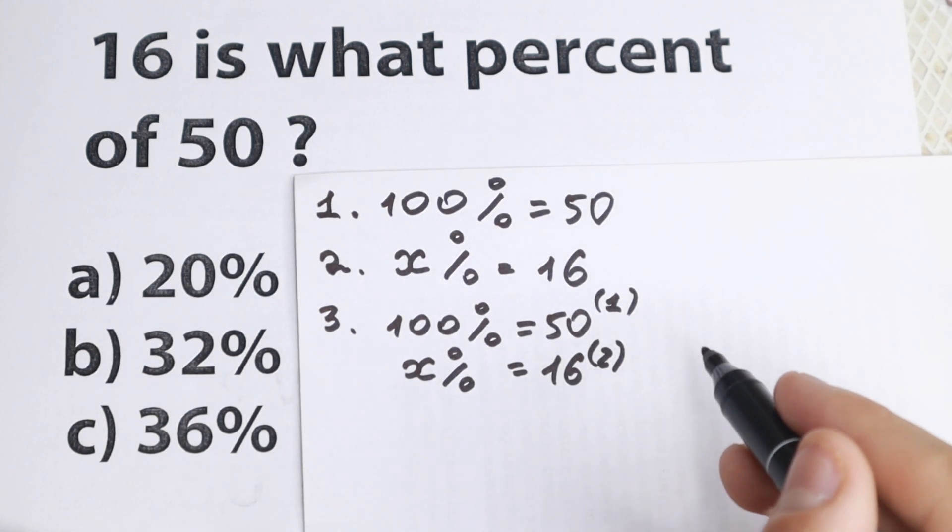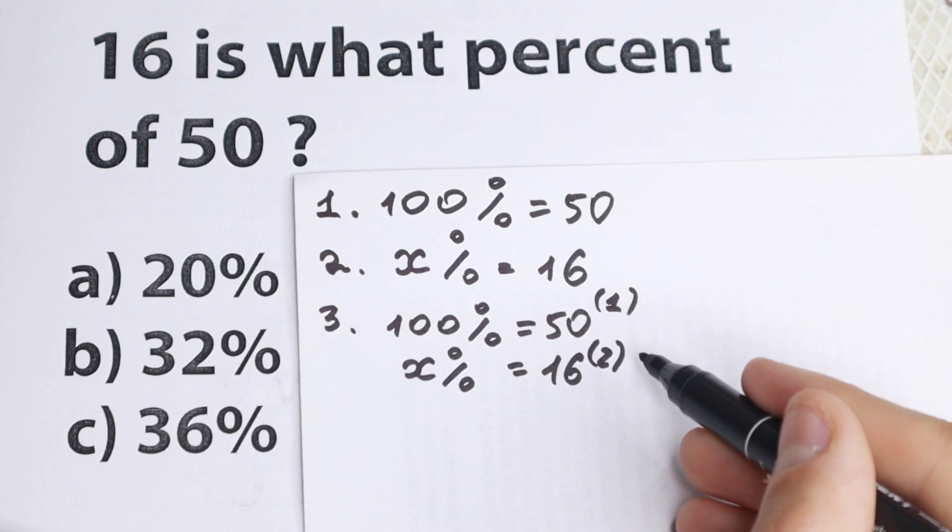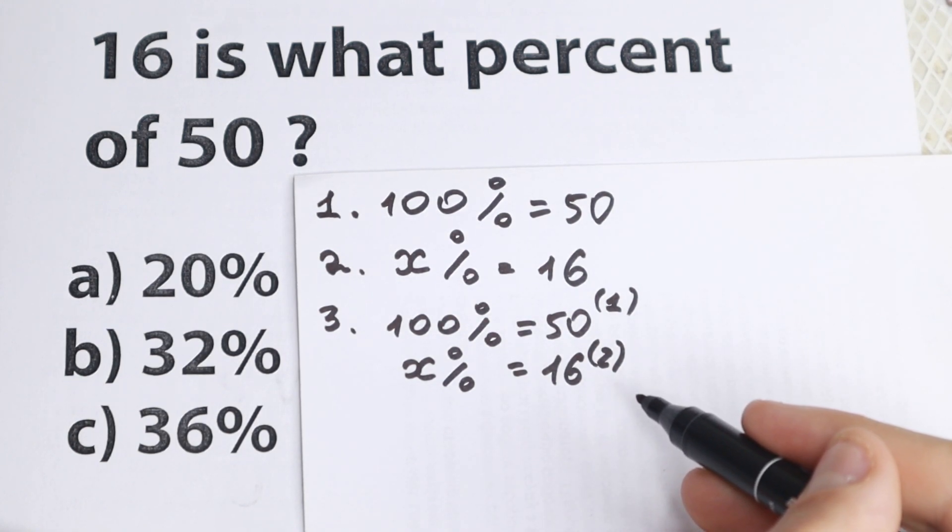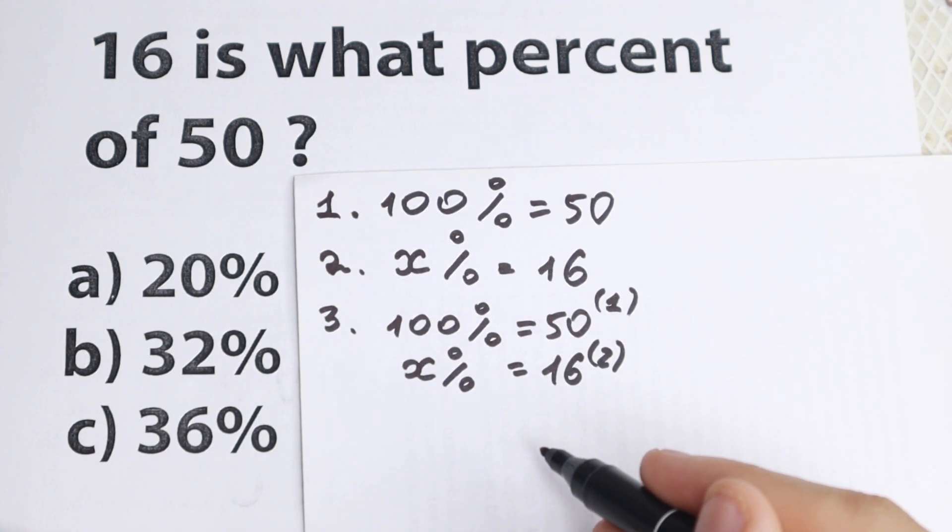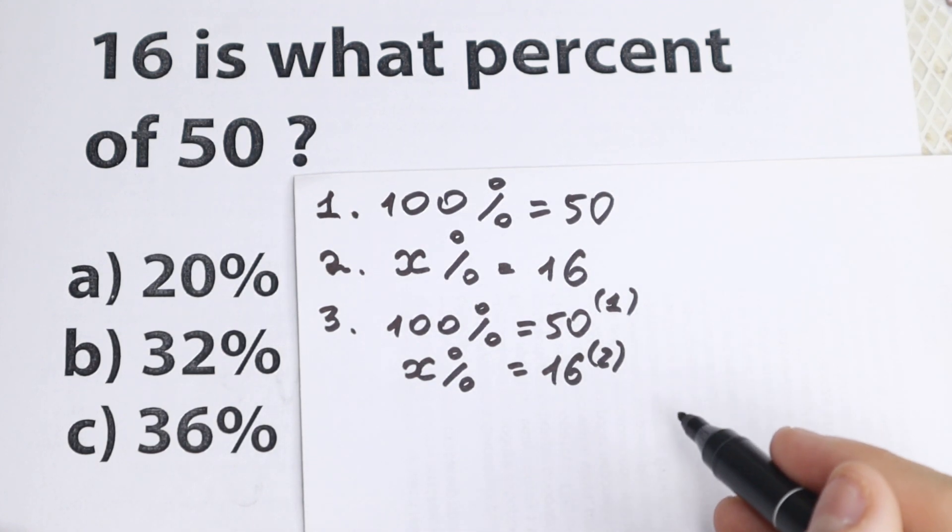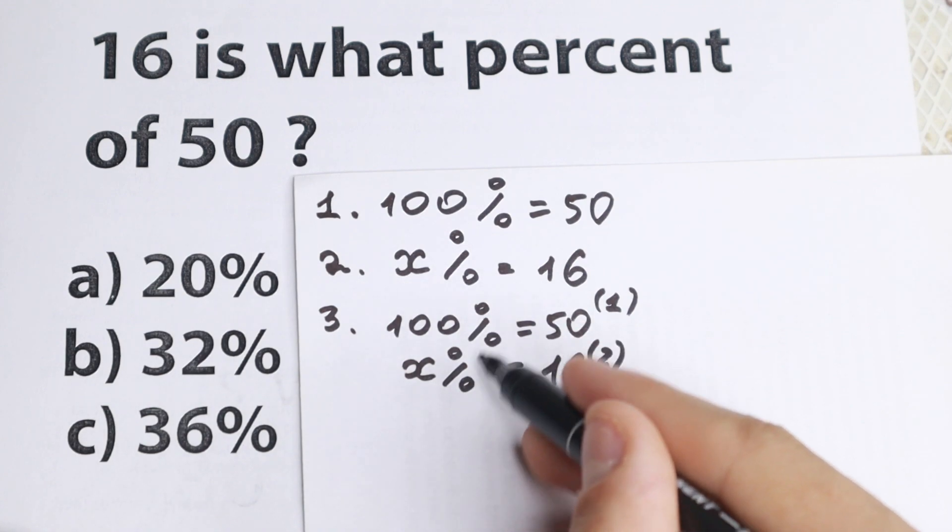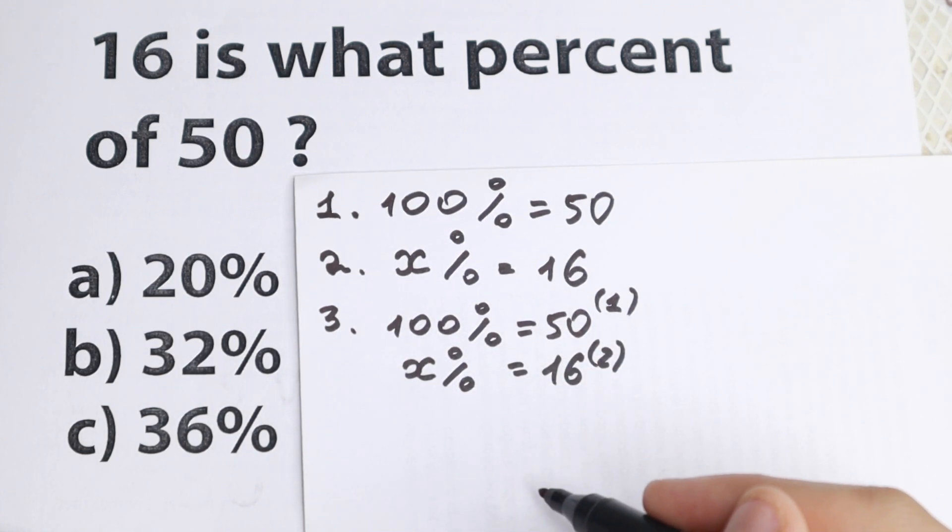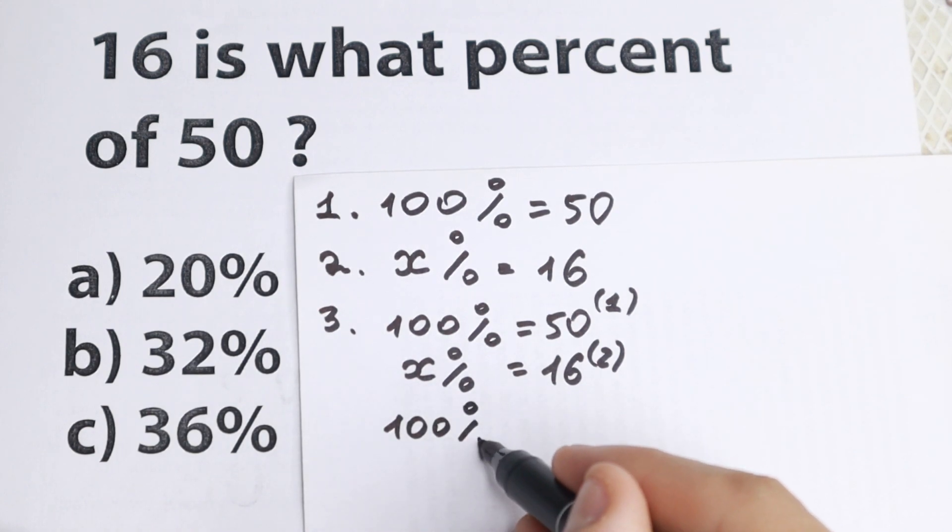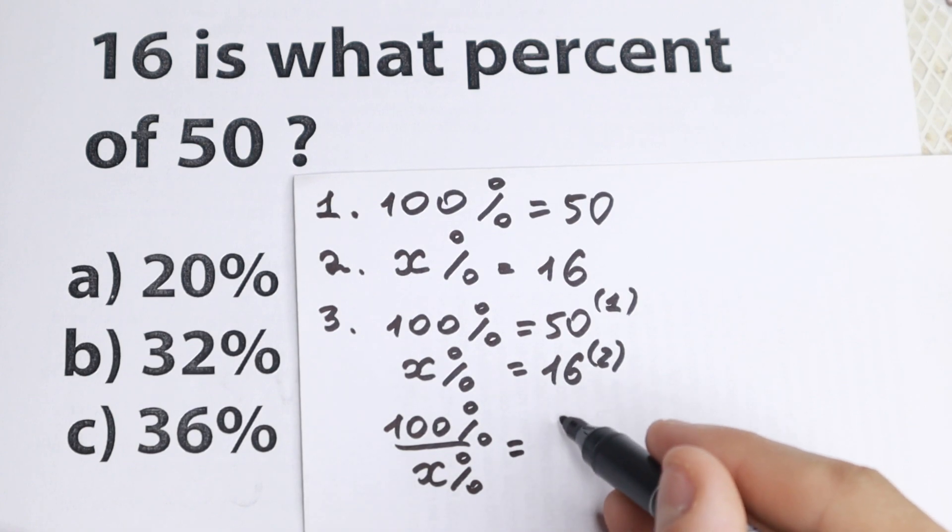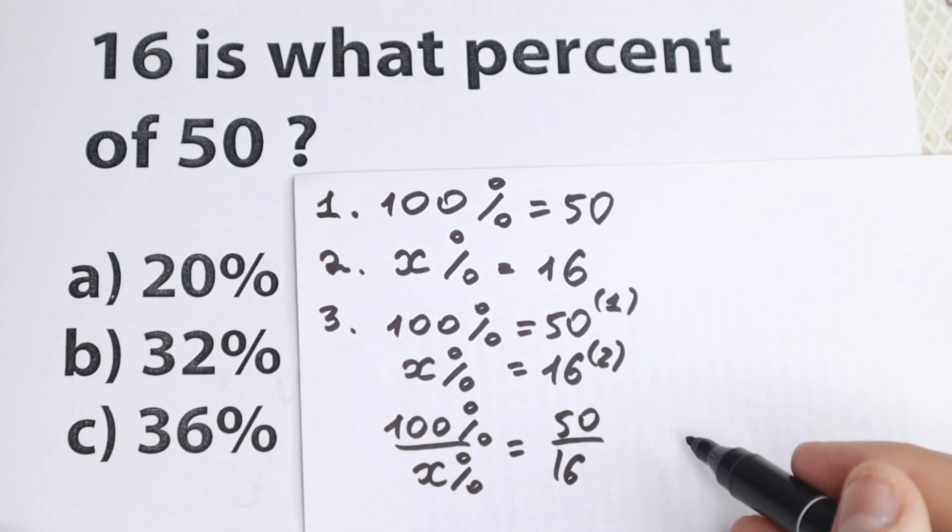Okay, the next step. By simply dividing equation one by equation two and taking note of the fact that both on the left hand side of both equations have the same unit percent. So right here and right here we have the same unit percent. So as a result we will have 100% over x percent equal to 50 over 16. So we have this question right now.